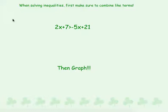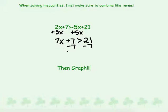Negative 5x plus 21 — same thing. Now we can move our variables. We always like to get our variables on the left side when dealing with an inequality, so I'm going to take that negative 5x and move it to the other side by adding 5x. That gives us 7x plus 7 is greater than 21, so we subtract 7 on each side and get 7x is greater than 14. Divide by 7, so x is greater than 2.